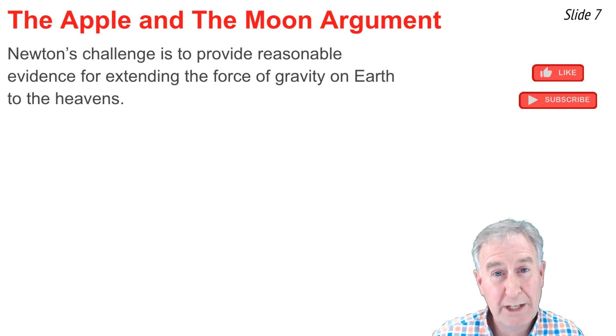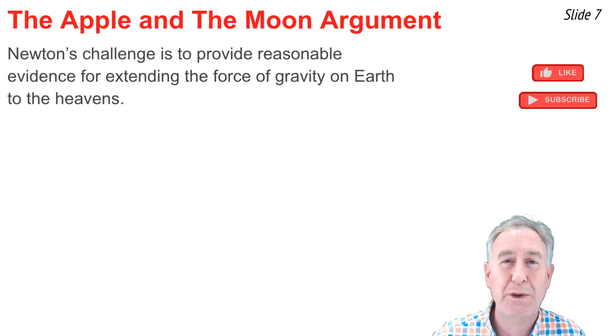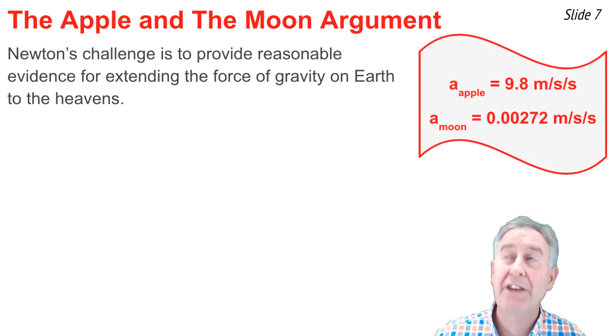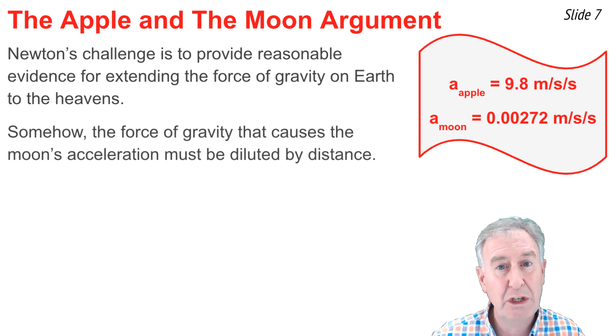Now science is empirical, which means it's supported by evidence. So Newton's challenge is to provide reasonable evidence for how you can believe that the force of gravity can be extended from the earth where the apple is to the moon, which is 60 times further away from earth's center. Here's the values known in the day. The acceleration of the apple was 9.8 meters per second squared, and the acceleration of the moon was 0.00272 meters per second squared. Somehow gravity is being diluted by the distance that the moon is from the earth, that the further distance makes the effects of gravity much less.